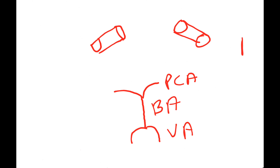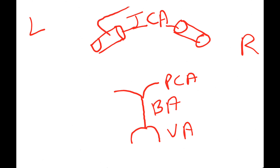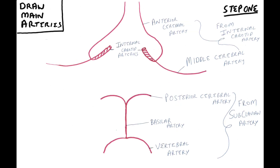Now let's draw two internal carotid arteries like this — this is the right side, this is the left side. From the internal carotid artery arises the anterior cerebral artery and the middle cerebral artery. So these are all the main arteries of the Circle of Willis.